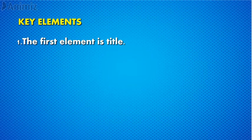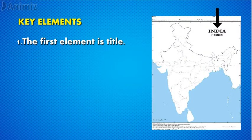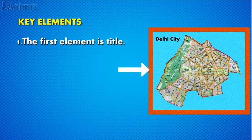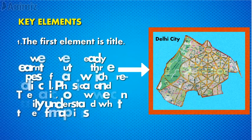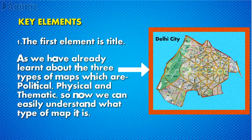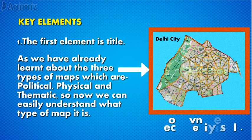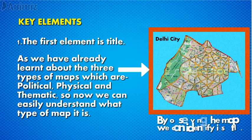Now let's learn about the key elements of maps. The first element is the title. We should see the title of a map, which gives information about it. For example: 'India Political,' 'World Physical,' or 'Delhi City' maps. Having already learned about the three types of maps — political, physical, and thematic — we can easily understand what type of map it is by observing its title.